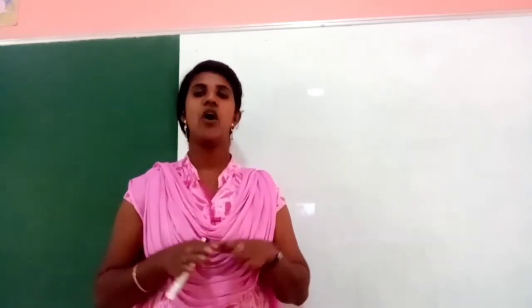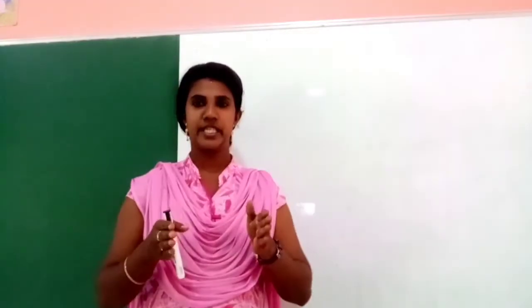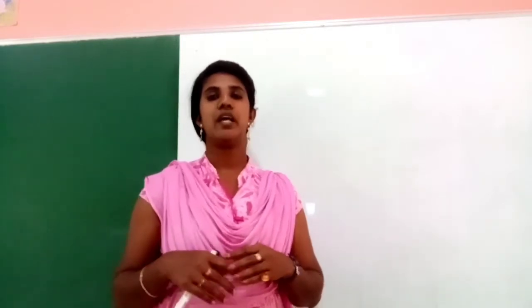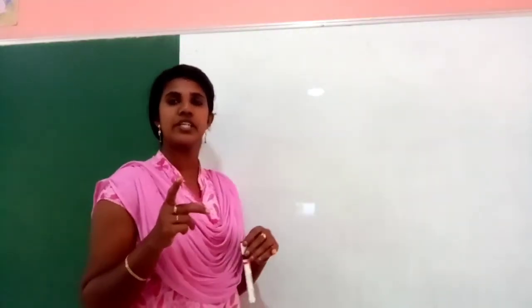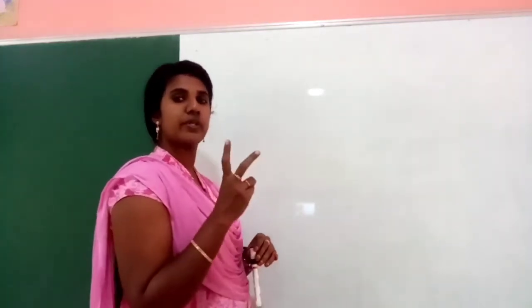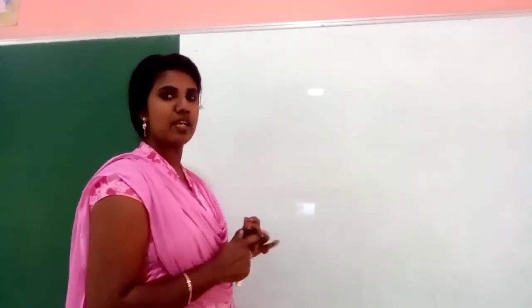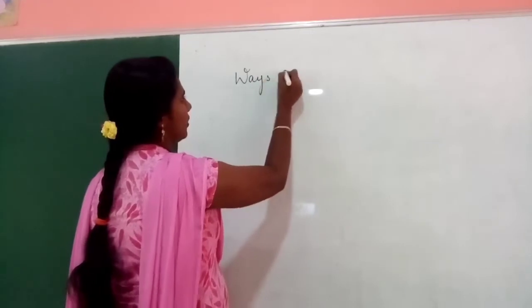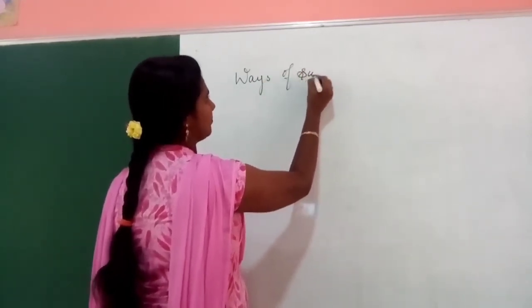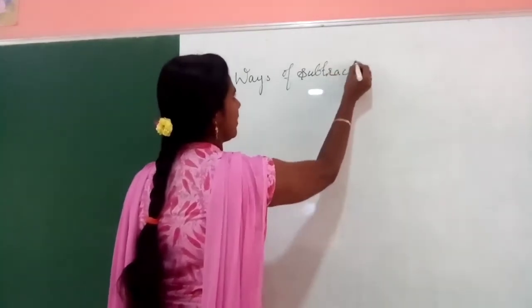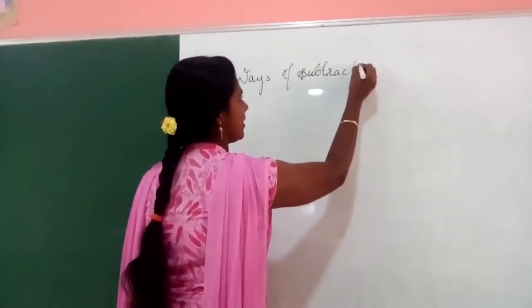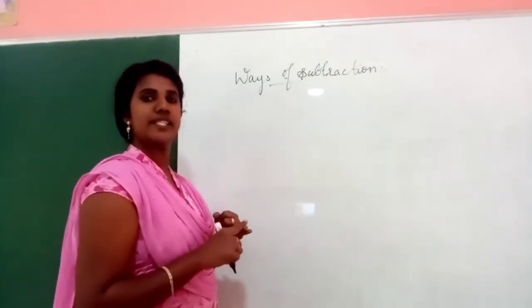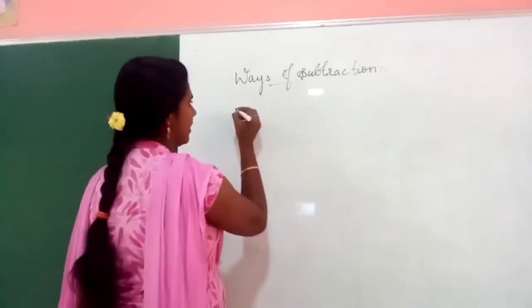The two ways are vertical subtraction and horizontal subtraction. How many ways? Two ways. What are they? Vertical and horizontal subtraction.